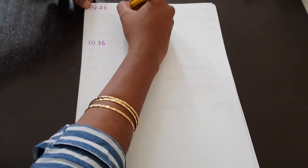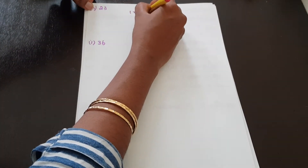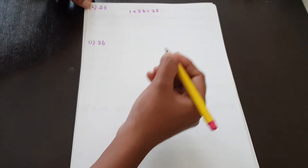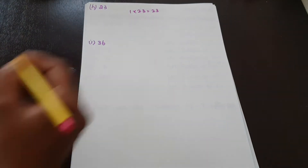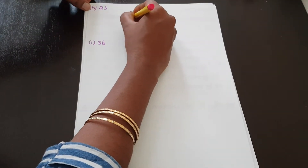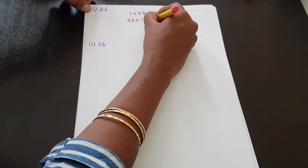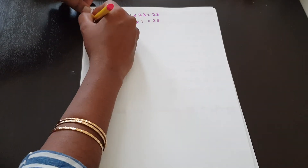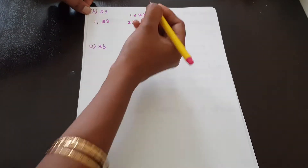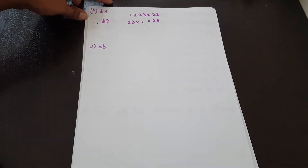Next, 23. 1 into 23 equals 23. 2, 3 and all other tables do not go. 23 into 1 equals 23. So the factors of 23 are just 1 and 23.